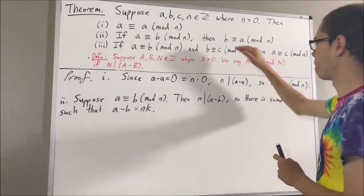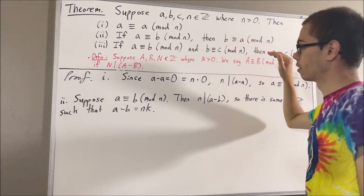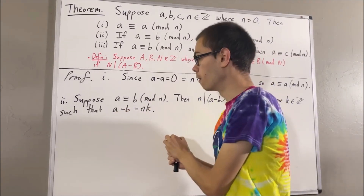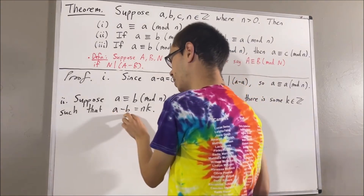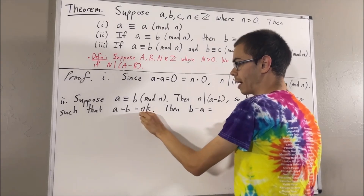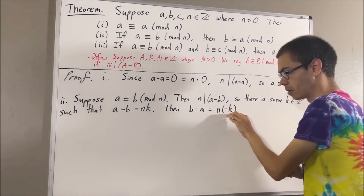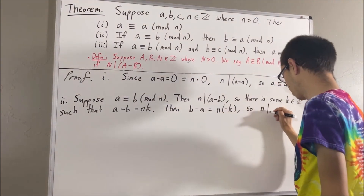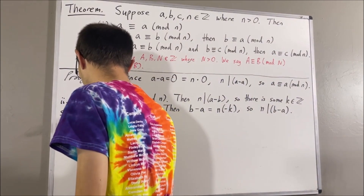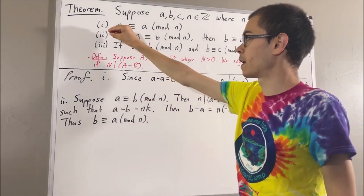Now, remember, our goal is to show that b is congruent to a modulo n. By our definition, this means we want to show that n divides b minus a. We can bring b minus a into our work just by multiplying negative 1 on both sides of this equation. If we multiply negative 1 on both sides, we know that negative 1 times a minus b is equal to b minus a. And negative 1 times nk is equal to n times negative k. So this tells us that b minus a is equal to n times an integer. Therefore, n divides b minus a. And since n divides b minus a, this tells us that b is congruent to a modulo n. We have shown if a is congruent to b modulo n, then b is congruent to a modulo n. This verifies our second fact.